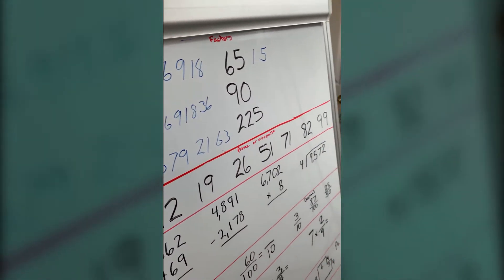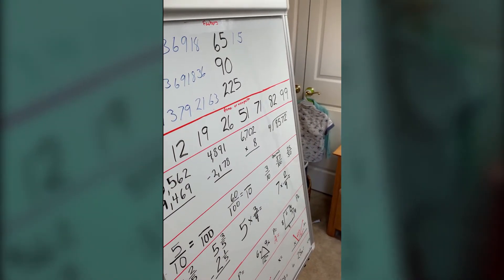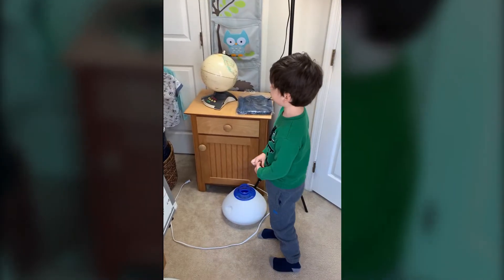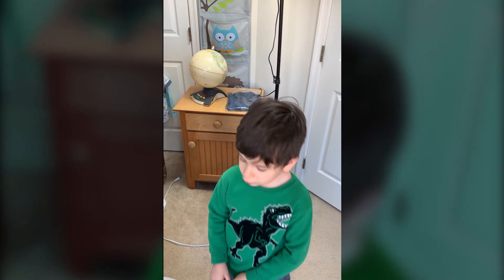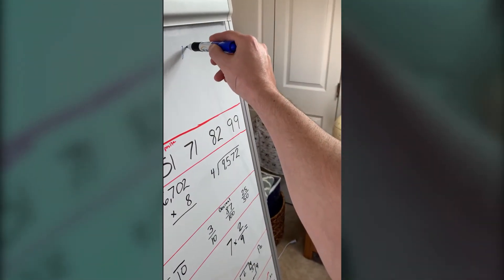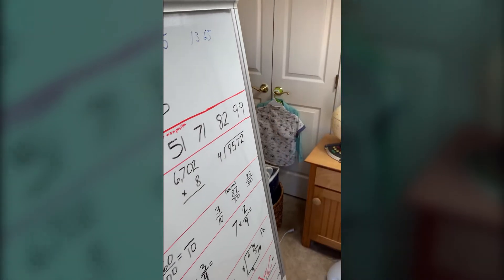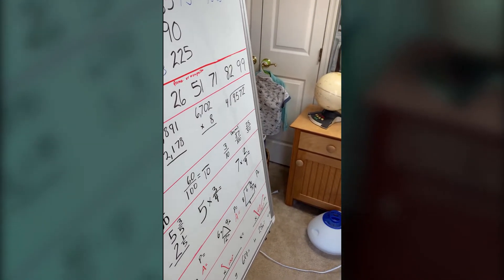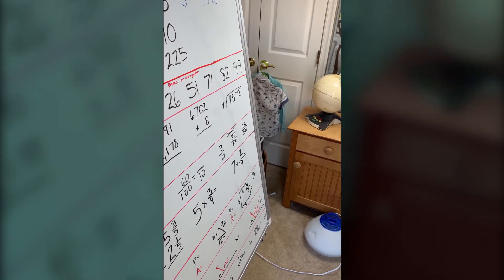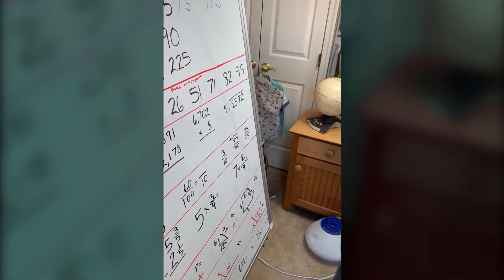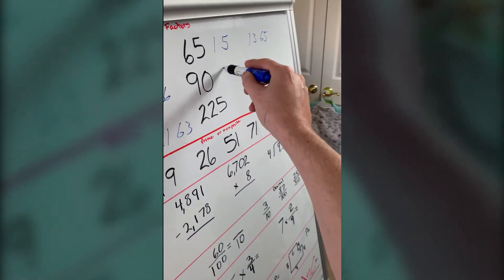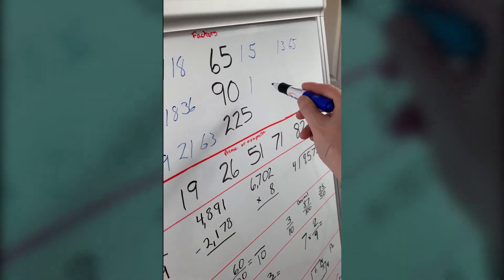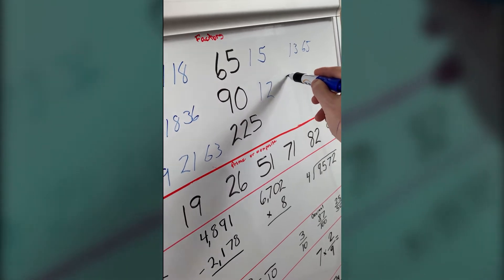What times 5 equals 65? Wait... 5... not 12 because that equals 16... 13. And what about 15? No, 15 is not a factor. Wait — okay, you got it. The factors of 90 are 1, 2, 5, 10, 30, and itself.